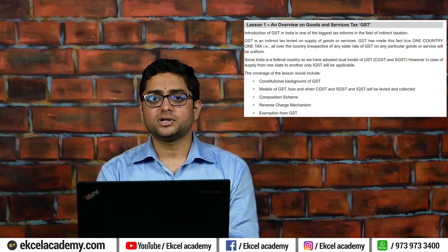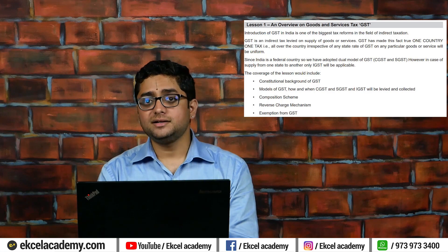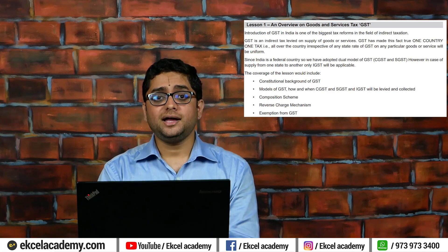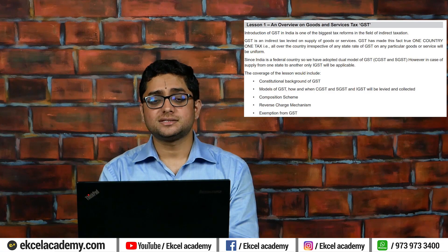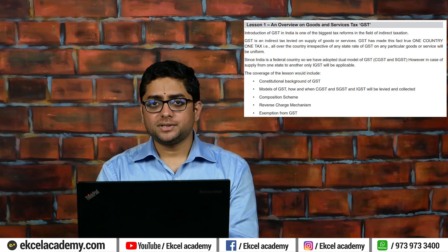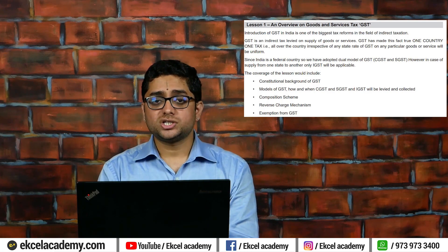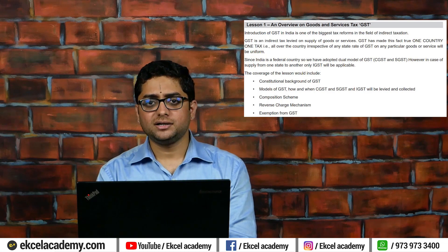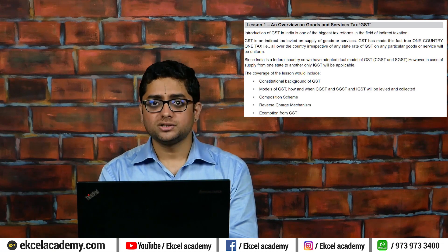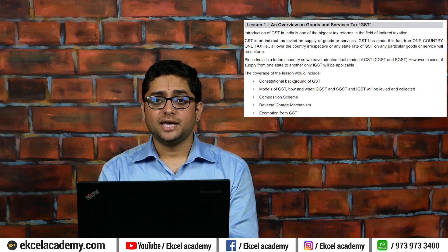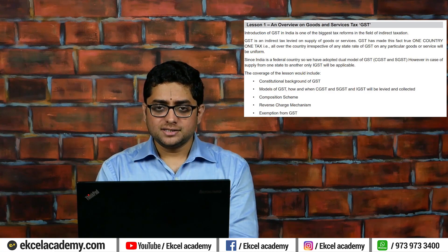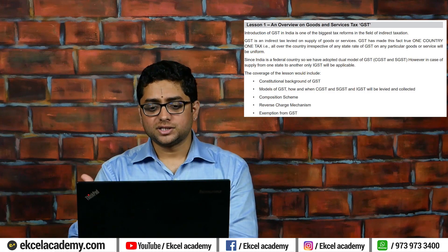The four laws and the fifth law — that is the SGST Act — were enacted and passed by all the legislative assemblies in the states, including the erstwhile state of Jammu and Kashmir, which is now a union territory. Except for two union territories with their own legislative assemblies — Delhi and Puducherry — every other union territory, such as Andaman and Nicobar, Daman and Diu, is governed under the UTGST provisions.